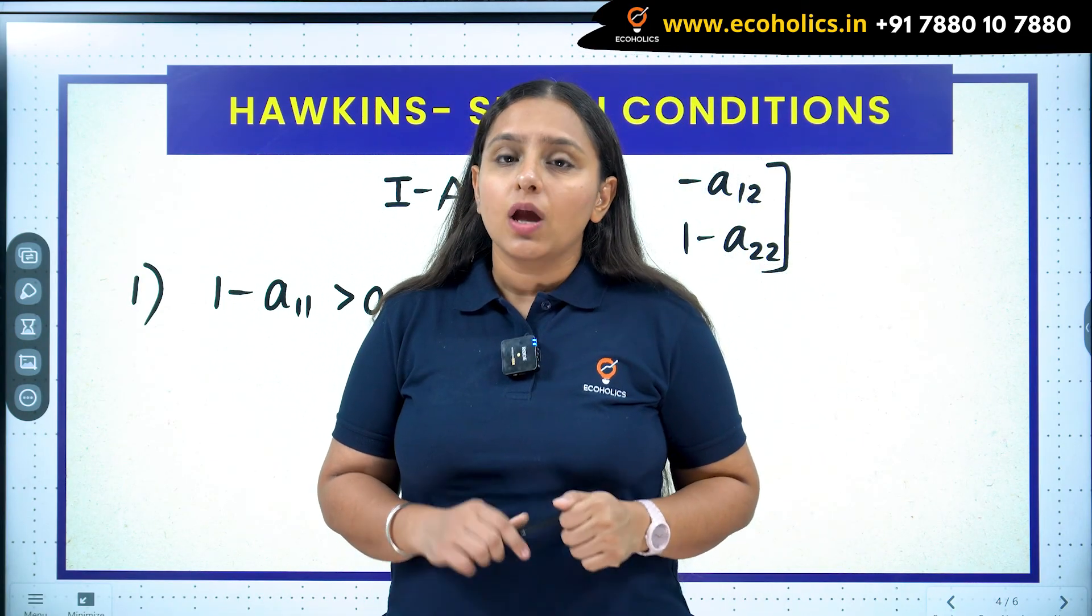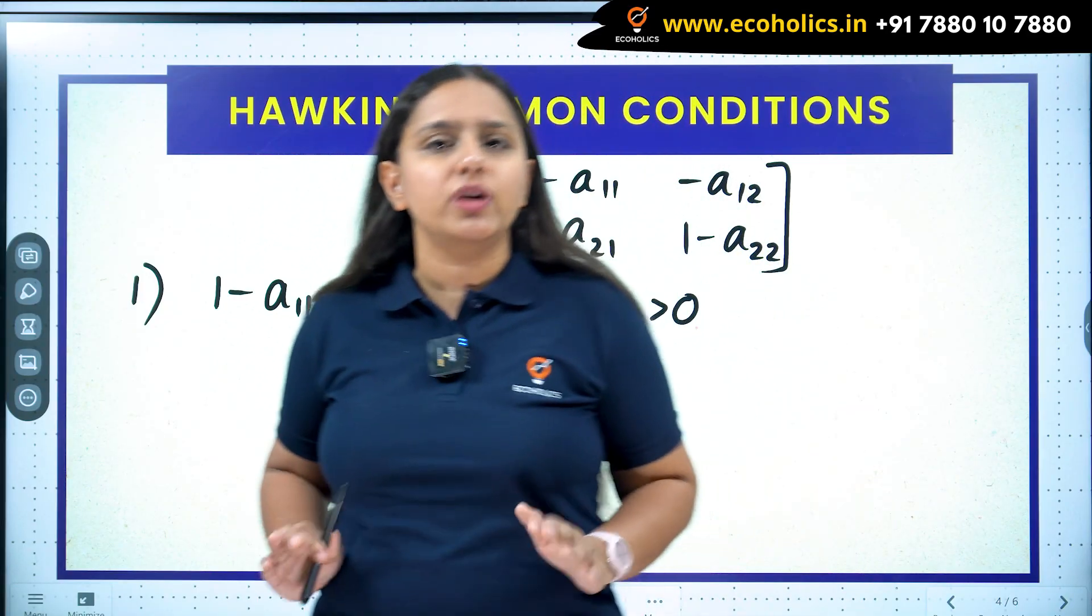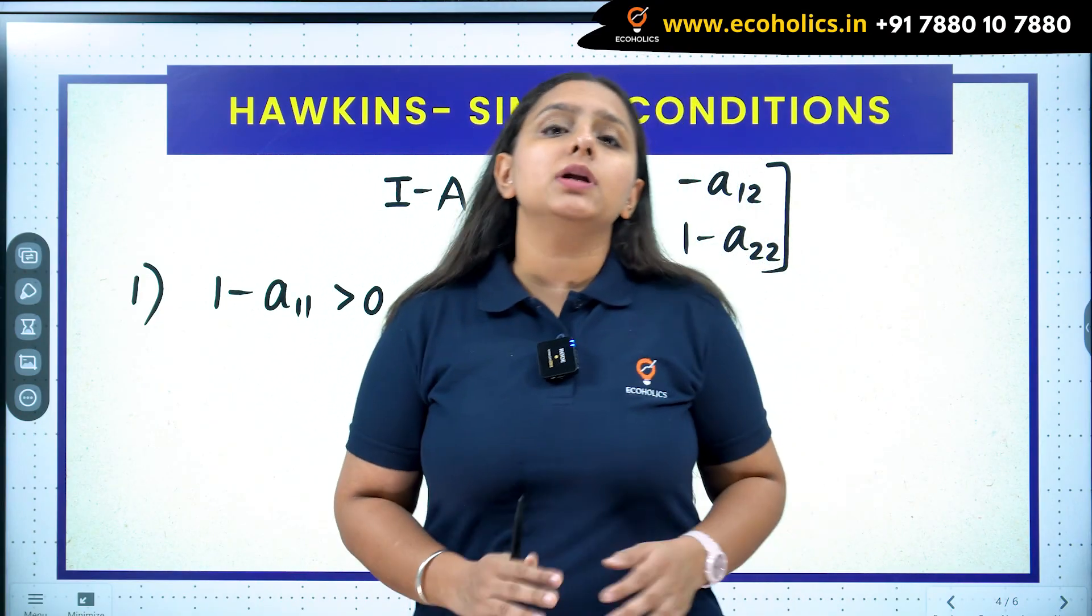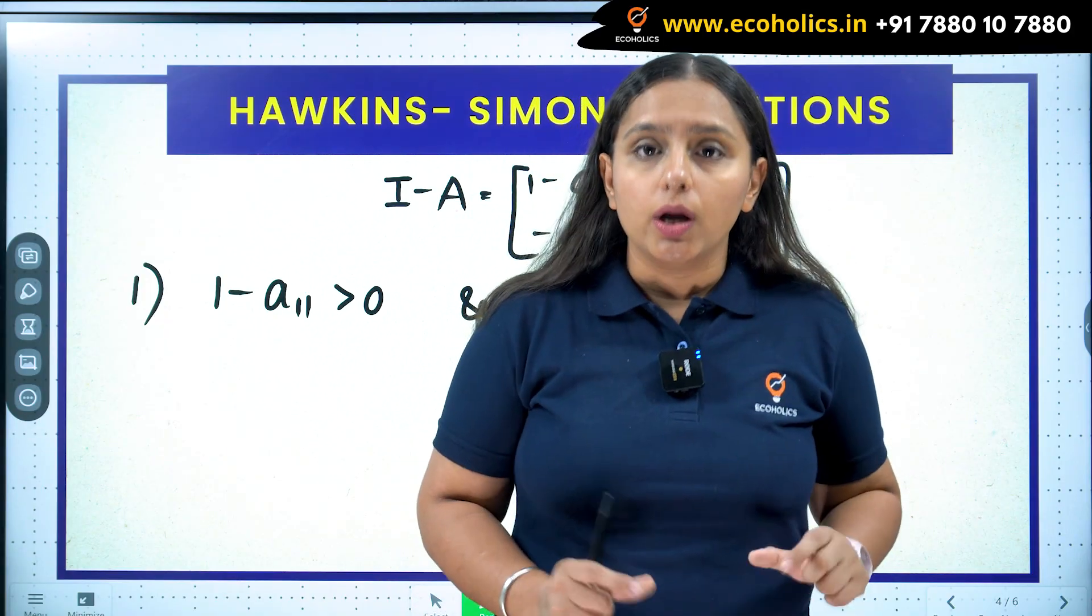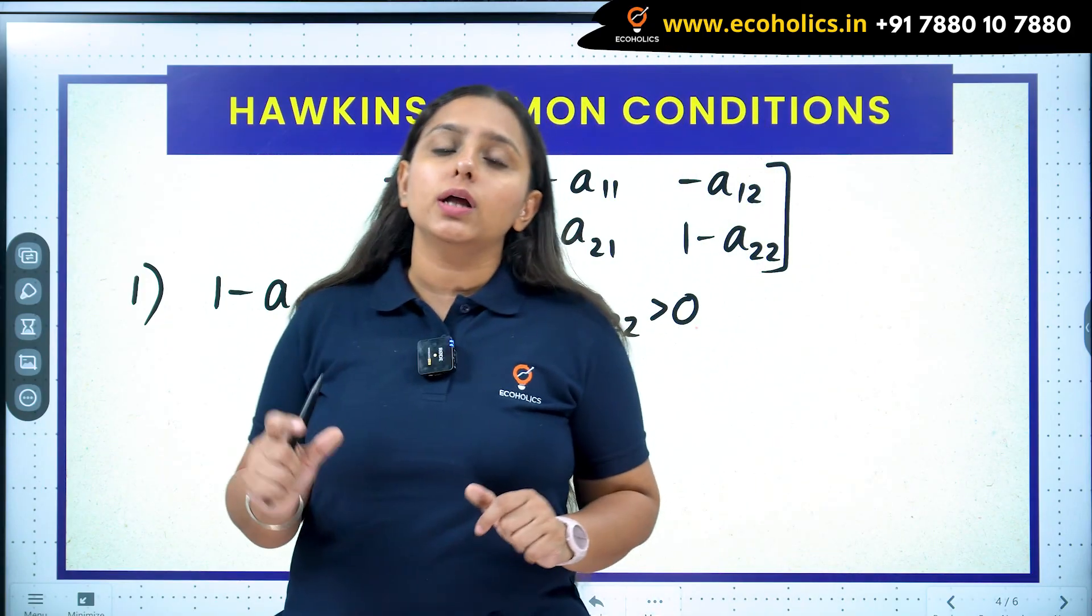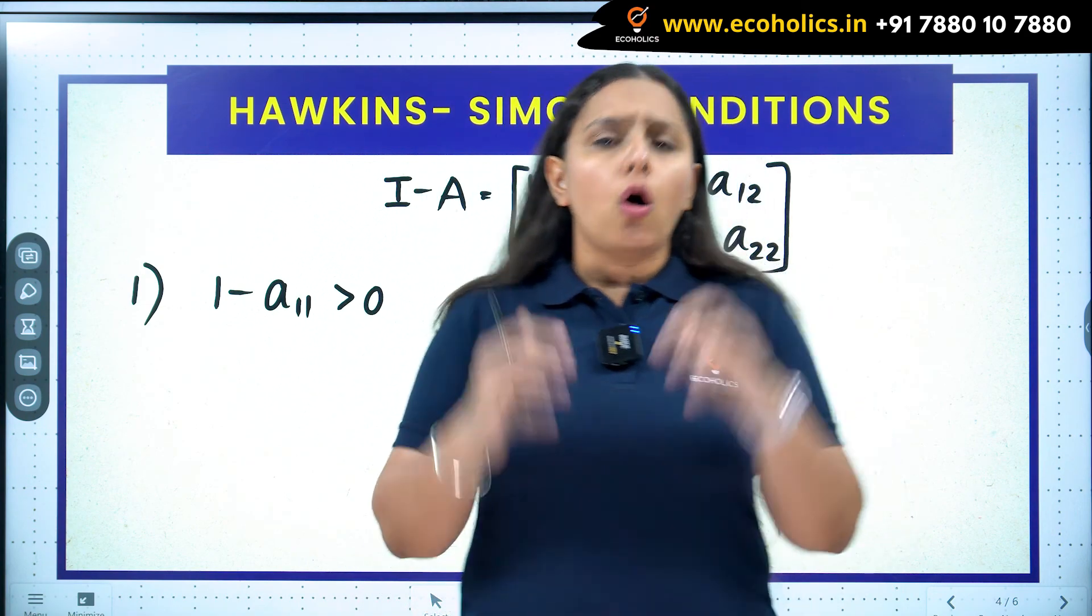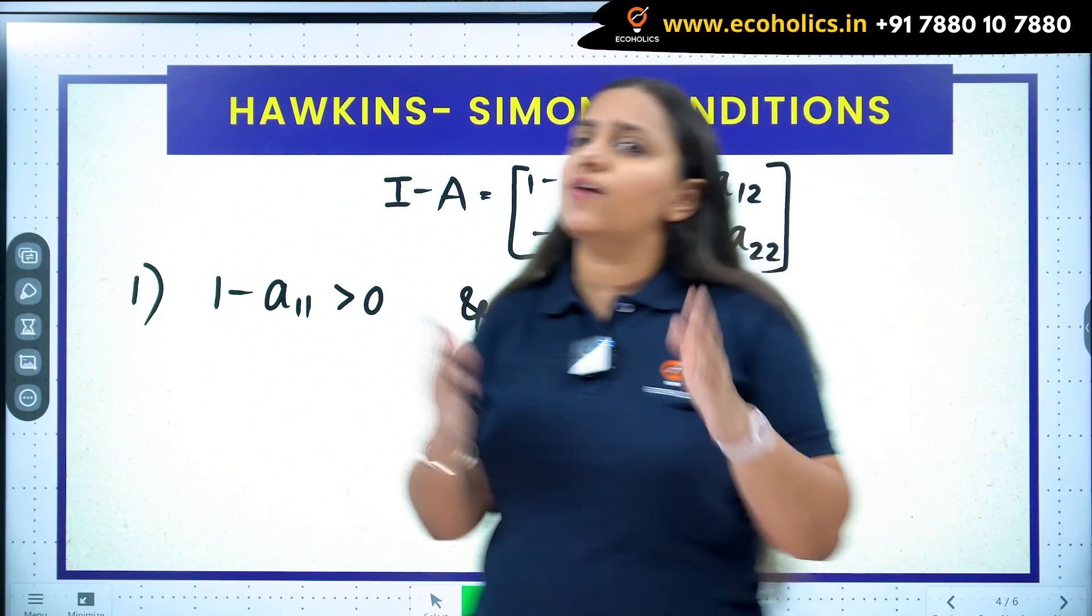But the thing is, are the answers which we are getting even consistent? Are they even viable? Because in production there are a lot of constraints which have to be satisfied to get that output. So Hawkins-Simon conditions are those two conditions which ensure that the answers you have got are viable according to the production process.